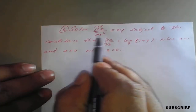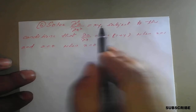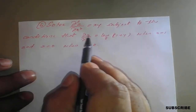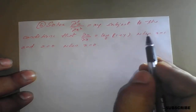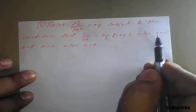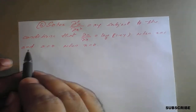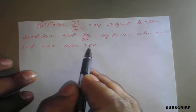Solve ∂²z/∂x² = xy, subject to the conditions that ∂z/∂x = log(1+y) when x = 1 (first condition), and z = 0 when x = 0 (second condition).